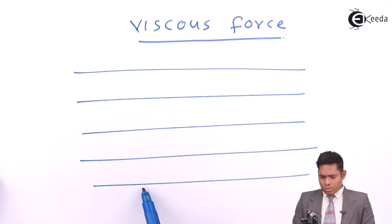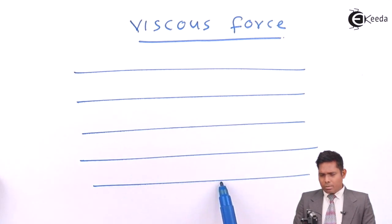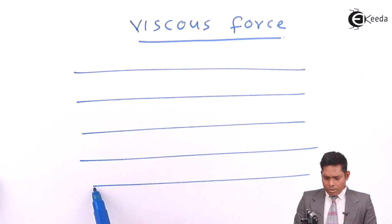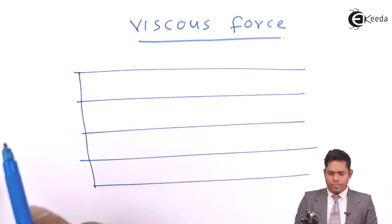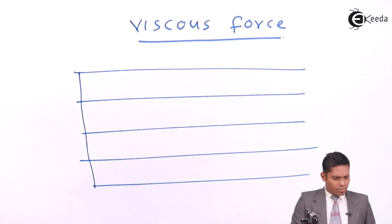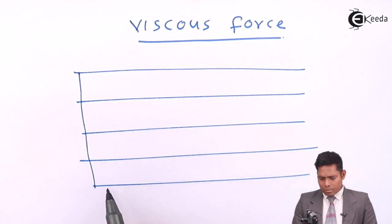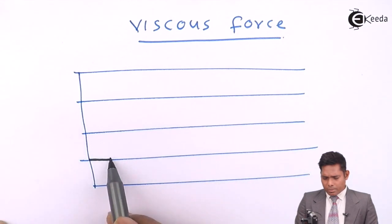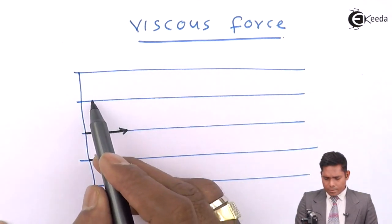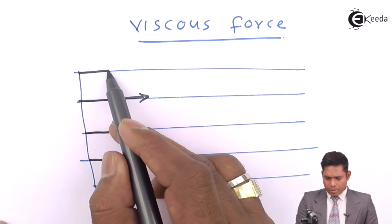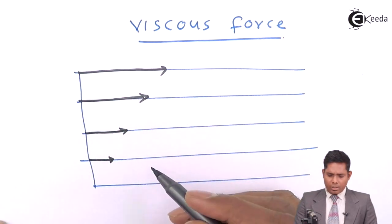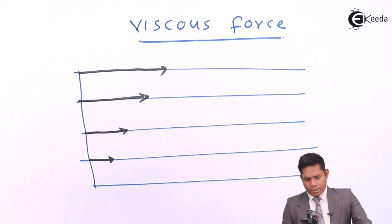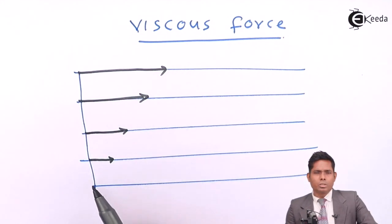The lowest layer is at the bed of the river where the velocity will be nearly zero. As we move from this point upwards, we will see there is a variation of flow velocity. Here it will be zero, and gradually it will increase. If you plot the graph, speed gradually increases from the bottom towards the top surface.